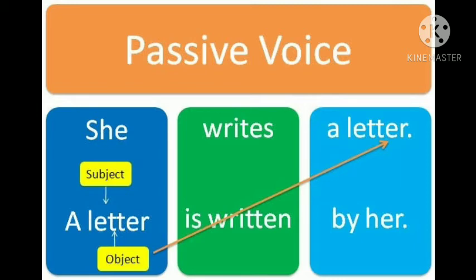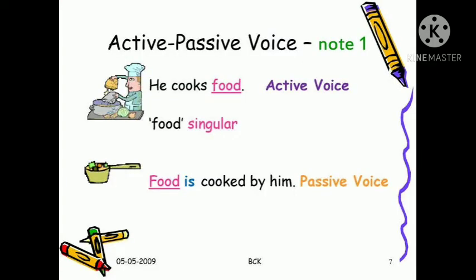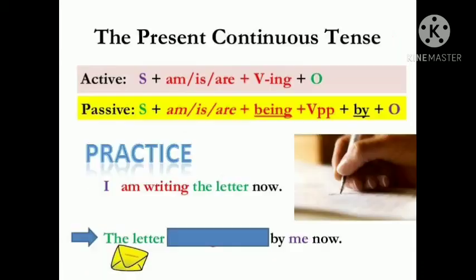'He eats hamburgers every day' is your simple present tense. Passive voice: 'Hamburgers are eaten by him.' Another example: 'She writes a letter.' Passive voice: 'A letter is written by her.' Note how 'she' changes to 'her' and 'he' changes to 'him.' Another example: 'He cooks food' — simple present tense. Passive: 'Food is cooked by him.' The formula is Object + is/am/are + Verb (third form). 'Cooked' is the verb's third form.